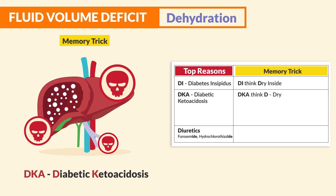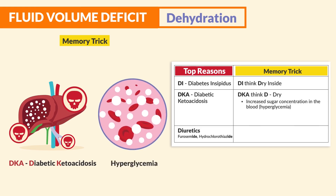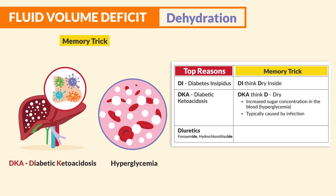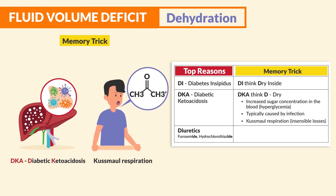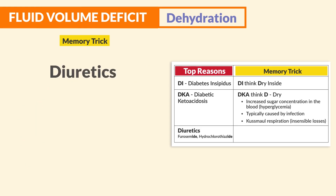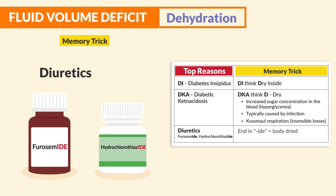The second D is DKA — diabetic ketoacidosis. Think 'D for dry.' With DKA, we see an increased sugar concentration in the blood — that hyperglycemia is typically caused by infection, which also dries the body out. A common manifestation is Kussmaul respirations — basically fast breathing — which leads to insensible fluid losses from all that rapid breathing.